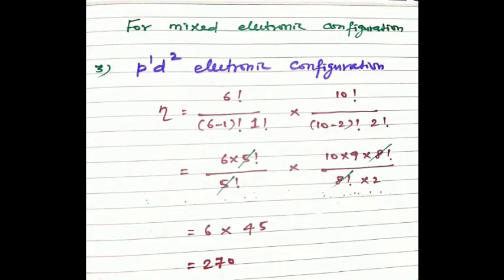Now the method for mixed electronic configuration. To find the total number of microstates in a P¹D² configuration, we calculate each separately and multiply. For P¹: 6 factorial by (6 minus 1) factorial into 1 factorial equals 6. For D²: 10 factorial by (10 minus 2) factorial into 2 factorial equals 45. Total microstates equals 6 times 45 equals 270.